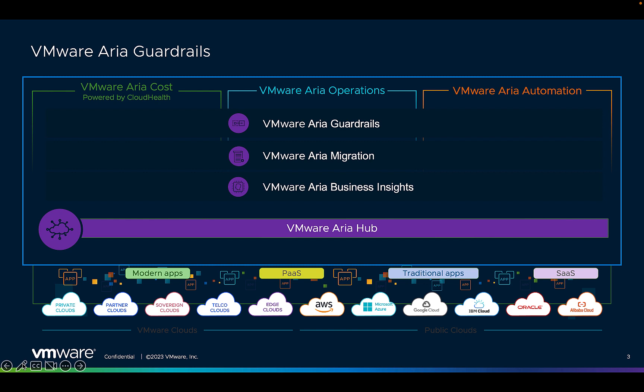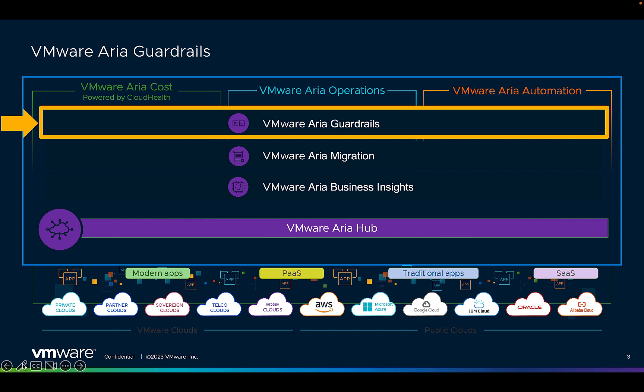Now let's review what Guardrails is. VMware ARIA Guardrails is a multi-cloud governance and policy management capability. It automates the enforcement of cloud guardrails for networking, security, cost, performance, and configuration at scale for multi-cloud environments with an infrastructure and policy as code approach.